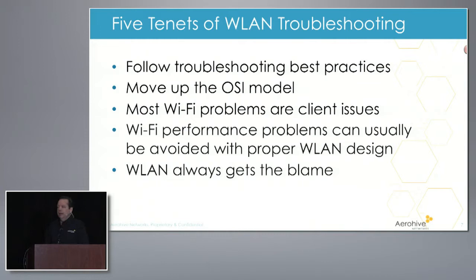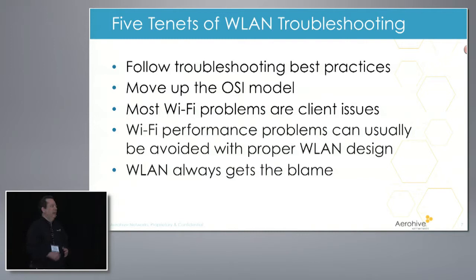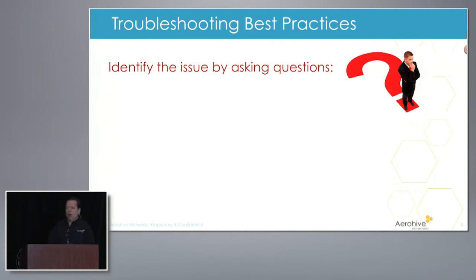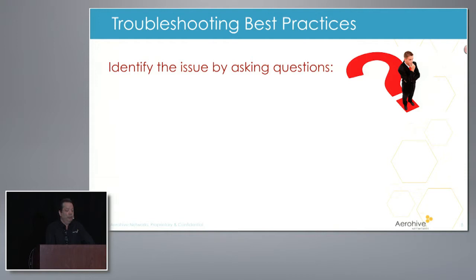Wi-Fi always gets the blame, and many times it's not the wireless LAN's fault — it's usually something higher up on the OSI stack. But your end users don't know that. From the end user perspective, all they know is they can't get on the internet over the wireless network, so of course the finger pointing begins. Let's talk about the first tenet: troubleshooting best practices. It's simply asking a lot of questions to identify the issue — and these are just common sense, ladies and gentlemen.